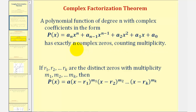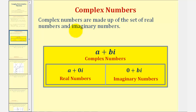Notice that we're not just talking about real zeros — we're talking about complex zeros. If we count complex zeros, the number of complex zeros will always match the degree of the polynomial, as long as we count multiplicity. If these r's are the complex zeros with multiplicity given by these m's, we can write a polynomial function as a product of linear factors, where the r's are the zeros and the m's are the multiplicities. Complex numbers are made up of the set of real numbers and the imaginary numbers in the form a plus or minus bi.